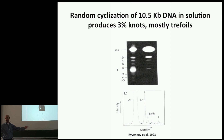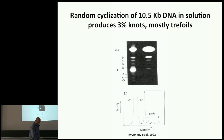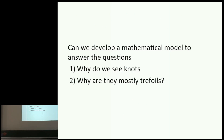Once you obtain these gels you can measure the signal and get different peaks — that's the quantification of the gel. From a math and knot theory point of view, the question is: can we develop mathematical models to answer why we see knots, and why the knots are mostly trefoils? Let me introduce some mathematical models used to study random knotting — the process of knotting through randomness.